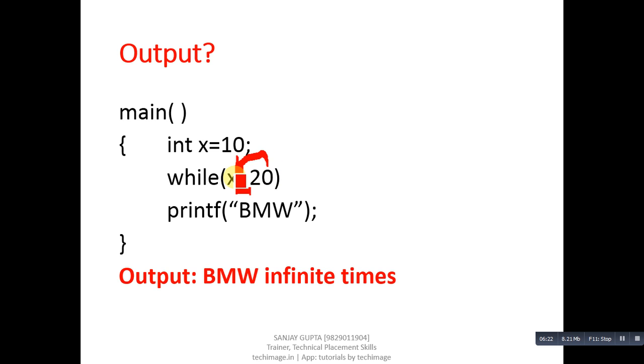So every time 20 will be assigned into X. 20 is a nonzero value, so nonzero values are always considered as true. So X is 20, 20 is true, so printf will print BMW. Again 20 will be assigned into X, then BMW will be printed. So every time whenever the loop condition is tested, 20 is assigned into X and X is considered as true because 20 is a nonzero value. So BMW will print infinite times because this loop will not get terminated.